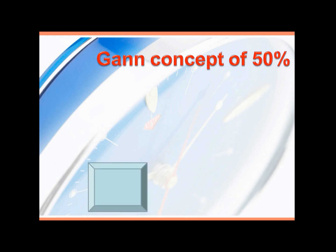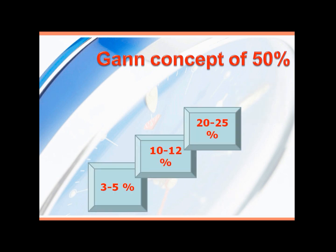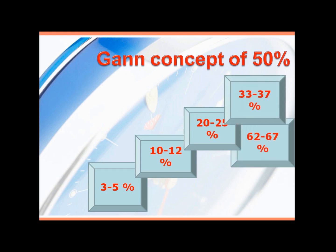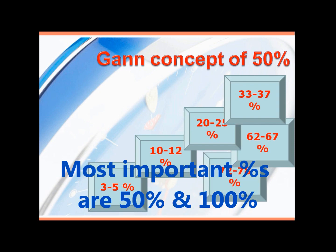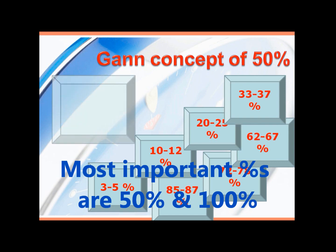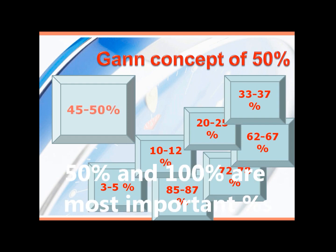Further, he has written you can use three to five percent, next ten to twelve percent, next twenty to twenty-five percent, thirty to thirty-seven percent, forty-five to fifty percent, sixty-two to sixty-seven percent, seventy-two to seventy-eight percent, eighty-five to eighty-seven percent. He added that the most important resistance levels are fifty percent and one hundred percent, and the proportionate part of one hundred percent.